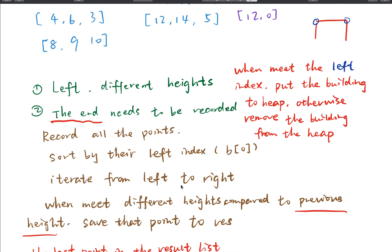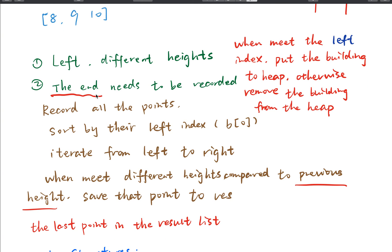In summary, we record a different height by getting the maximum height from the heap and comparing it with the last height in the result list. If they are different, we save the maximum height and current key to the result list. When the key equals the left index we put the building into the heap; otherwise we remove the building from the heap. Don't forget when the heap is empty we need to record the last endpoint.